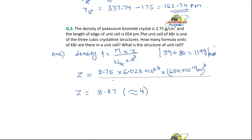Now you do remember that FCC lattice has 4 points or 4 particles per unit cell. So there are 4 KBr units per unit cell.